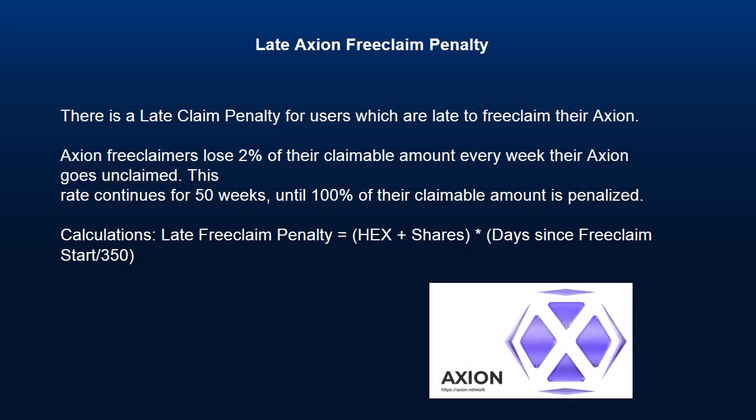There is a late claim penalty for users who are late to free claim their Axion. Free claimers lose 2% of their claimable amount every week their Axion goes unclaimed. This rate continues for 50 weeks, until 100% of their claimable amount is penalized. The calculation is: Late Free Claim Penalty = HEX shares × days since free claim start / 350.